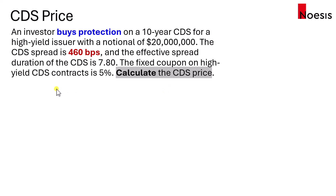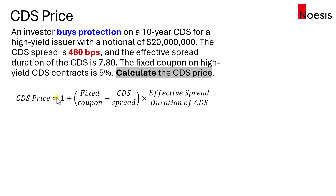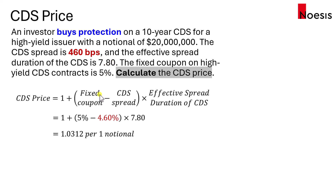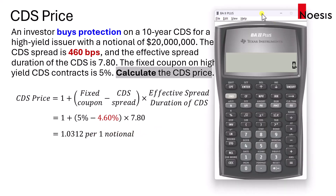We'll use a formula which is 1 plus the fixed coupon minus the CDS spread, and the difference will be multiplied by the effective spread duration of the CDS. Substituting the numbers in: the fixed coupon is 5%, the CDS spread is 4.6%, and the effective spread duration is 7.8. This will give 1.0312 per 1 unit notional — be careful when you do the calculation.